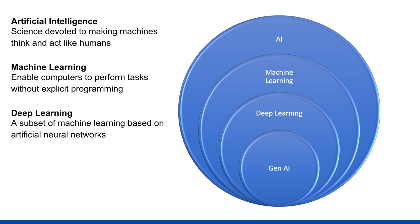Within machine learning there is another very deep topic — deep learning. Machine learning enables computers to perform tasks without explicit programming, but computers still think and act like machines. Their ability to perform complex tasks — like gathering data from an image or video — is still not as good as a human being. Deep learning introduces a more sophisticated approach because it's specifically modeled after the human brain.